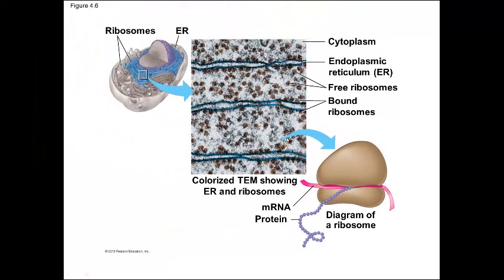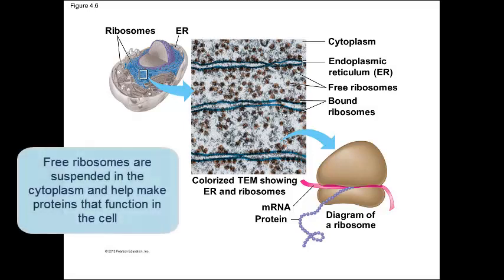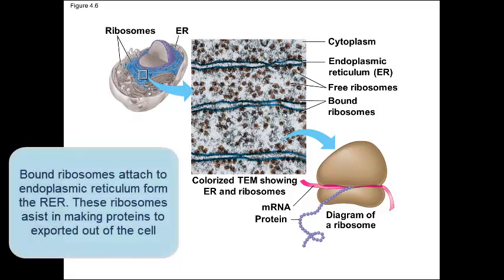The other thing we can see from the photograph is that while some ribosomes are attached to that endoplasmic reticulum — we call it rough ER — others are free and suspended in the cytoplasm. Typically these are the ribosomes involved in making proteins that are going to stay within the cytoplasm, while bound ribosomes attached to the endoplasmic reticulum will be producing proteins that will be dispersed outside of the cell.